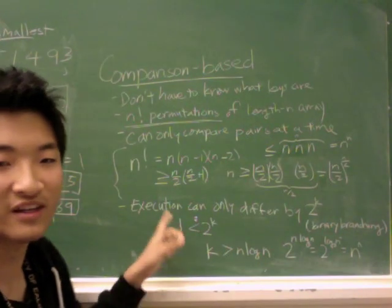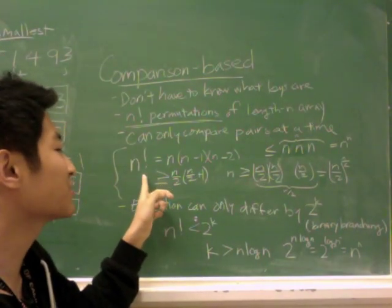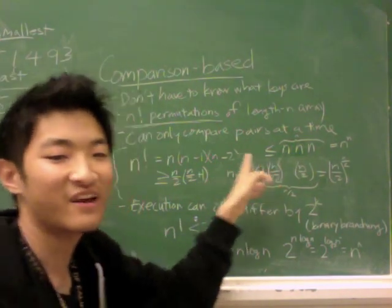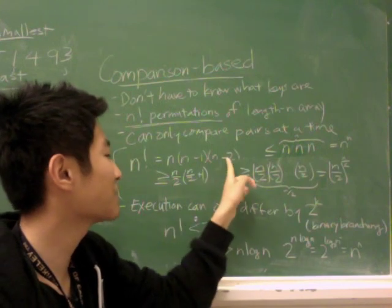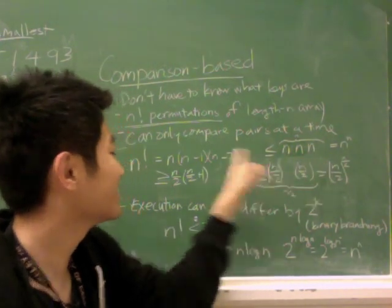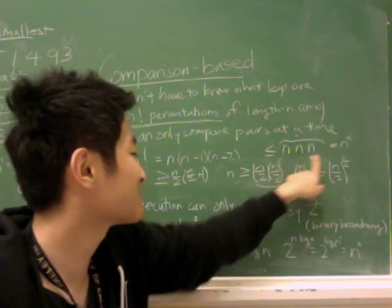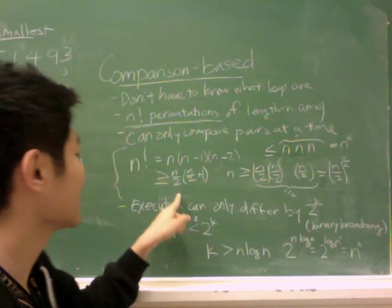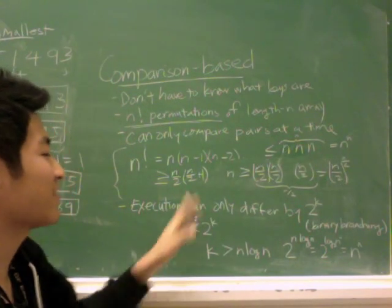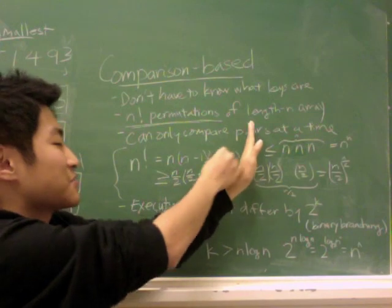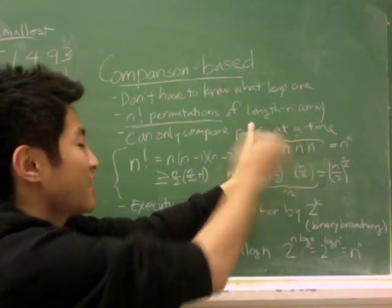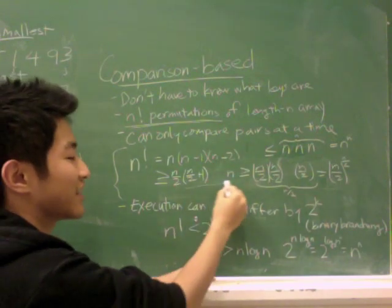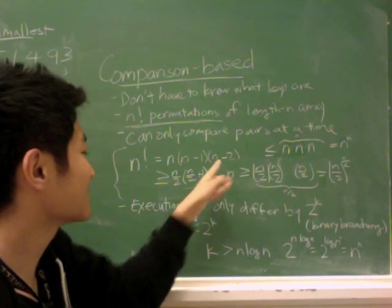So we can derive an upper bound and the lower bound for n factorial. So n factorial is n times n minus 1 times n minus 2 dot dot dot. If you replace the n minus 1, n minus 2 with n's, you'd agree with me that this is much bigger than n factorial, and that's n to the n. Now, on the other hand, if I cut short n times n minus 1 times n minus 2 to n over 2, this is what I get. And you know that this is already less than that.